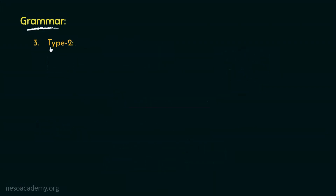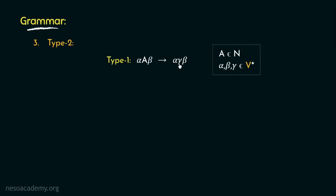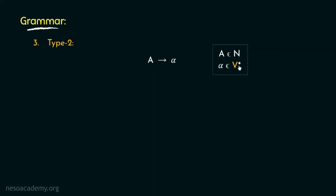The next category is called the type 2 grammar. In type 1 or context sensitive grammar, the production form is alpha A beta → alpha gamma beta, meaning A derives gamma in association with contexts alpha and beta. In case of type 2, the added restriction is that the left hand side of the production rule should be free of any contexts. So productions in type 2 are of the form A → alpha, where A is a non-terminal and alpha belongs to V*, meaning alpha can be any string over N union T. The left hand side will have only a single non-terminal, free of any context. This is why type 2 grammar is also known as context free grammars.